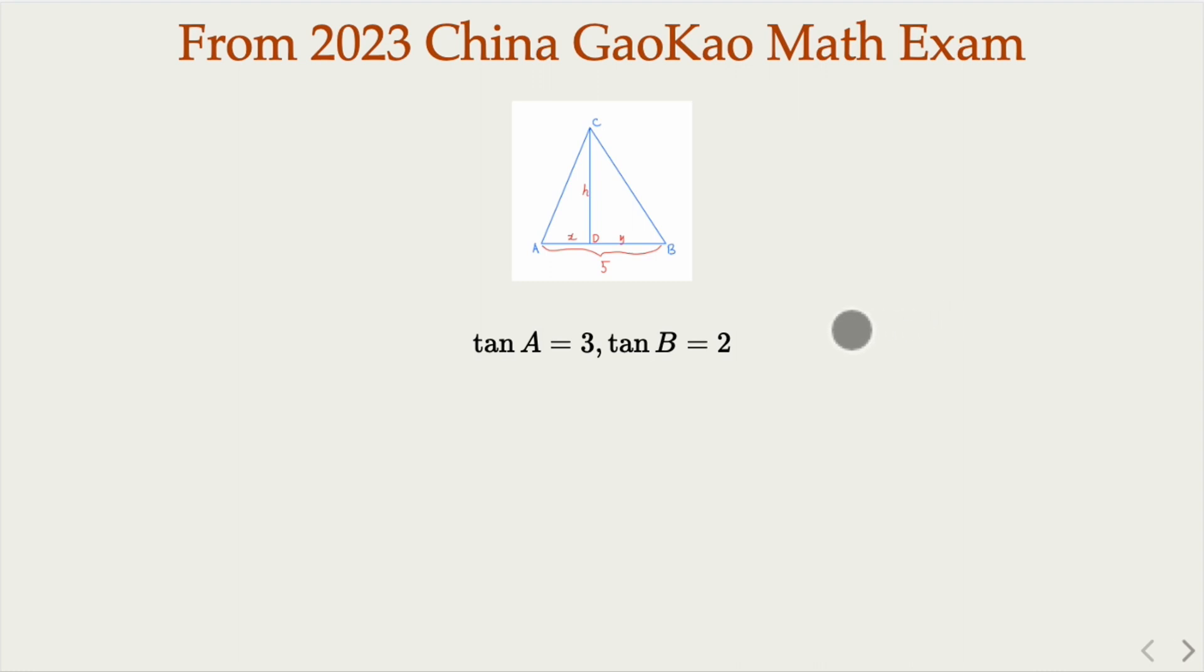Once we know tangent A and tangent B from this relation, we know that h equals 3x and equals 2y. And of course, x plus y equals 5. So 5 equals x plus y equals this equation. You solve for h equals 6. That's the answer.